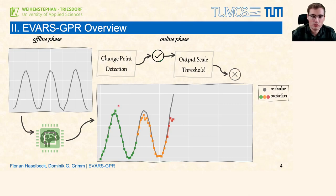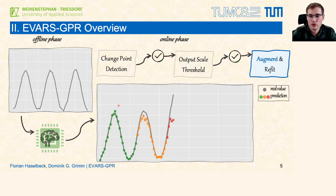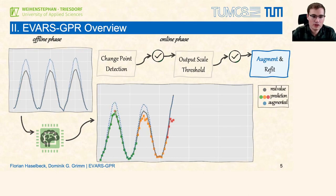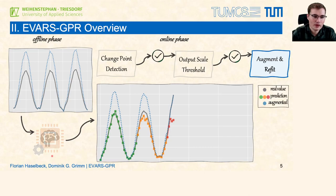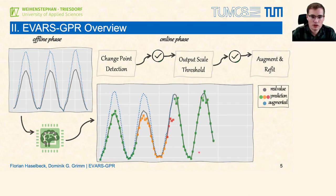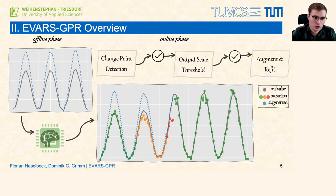At a certain time step both the change point detection and the check of the output scale may be fulfilled, and then we trigger the augment and refit step. At the augmentation step we update existing data with information on the current output scale. Then we refit our current prediction model using this augmented data. This updated model is then used for further predictions, and after all, our predictions are useful again. All these described steps are done for every time step: first we predict the next value, then we run an online change point detection, we check the output scale, and in case both are fulfilled we augment and refit.